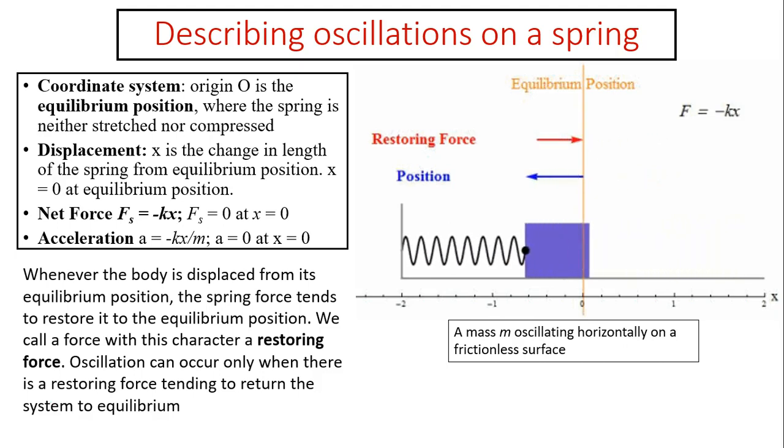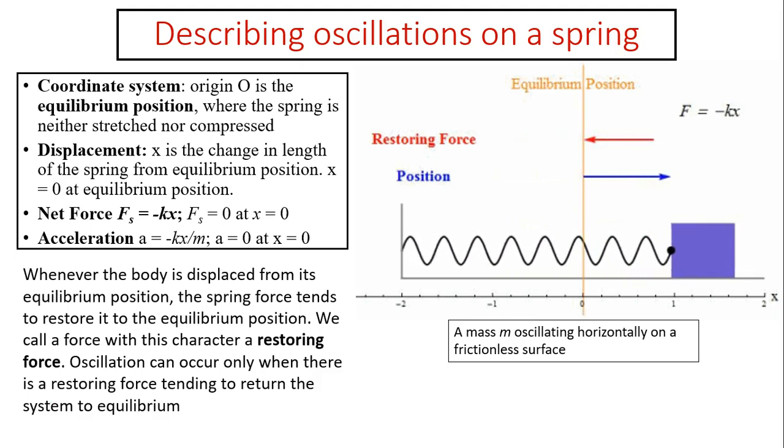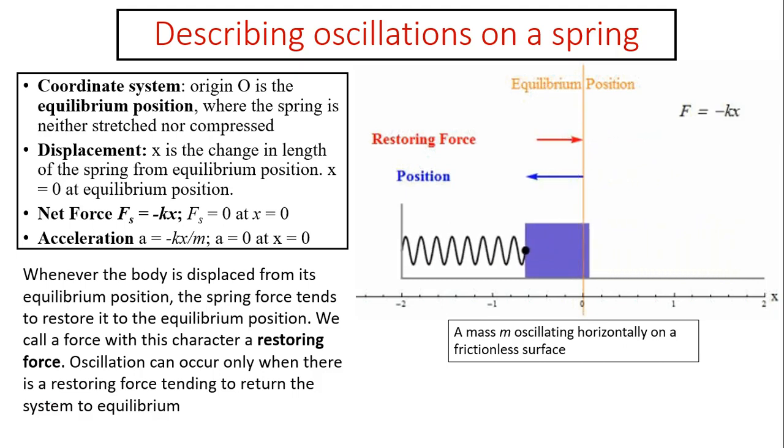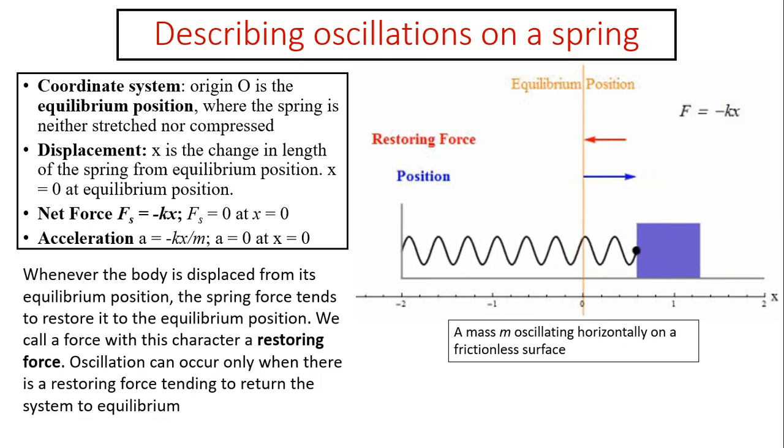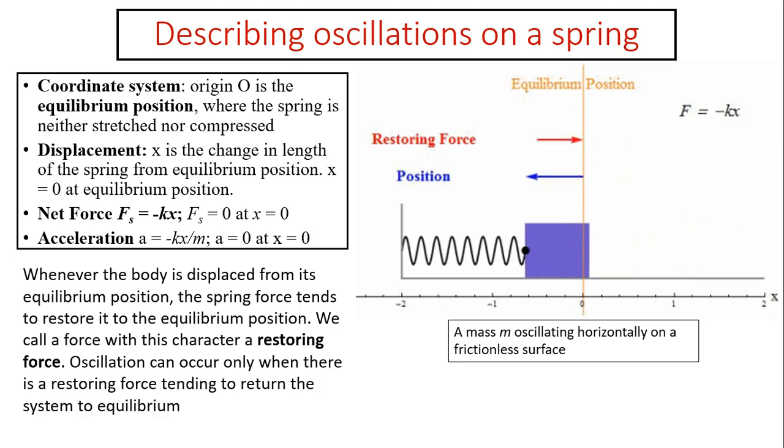To describe oscillation on a spring, we need our coordinate system. Origin O, or x equals zero, is the equilibrium position. To describe the displacement, we always describe displacement relative to this origin equilibrium position.